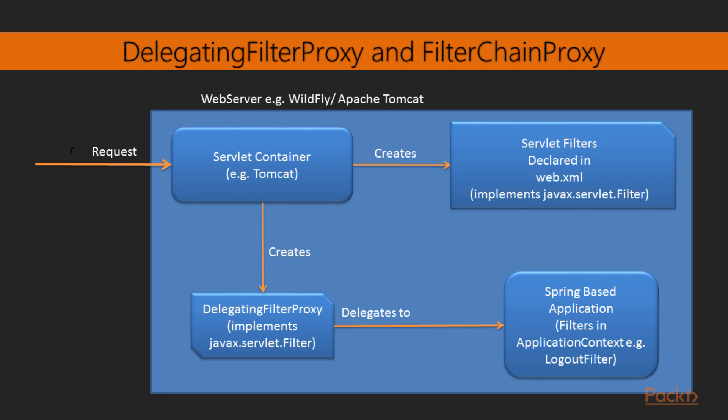The Filter Chain Proxy takes care of all the filters you create in your application context. Rather than having multiple entries of Delegating Filter Proxy, Spring Security provides the Filter Chain Proxy: the Delegating Filter Proxy delegates to it, and it manages all the filters. Since we are using Java config, we don't need to configure the Delegating Filter Proxy manually — we don't even have to create a web.xml. That's the beauty of Java config; you don't have to register the Delegating Filter Proxy yourself.